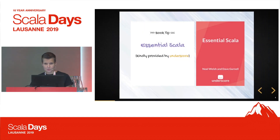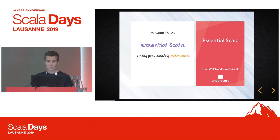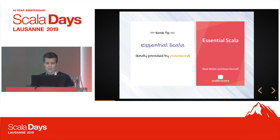That was a short intro and we're going to look at the different kinds of polymorphism in more detail now. I also have a recommendation for reading material: there's an excellent book called Essential Scala, kindly provided by the people from Underscore for free. If you like it, you can donate to the Typelevel project. It's definitely a good read if you're interested in the topic.